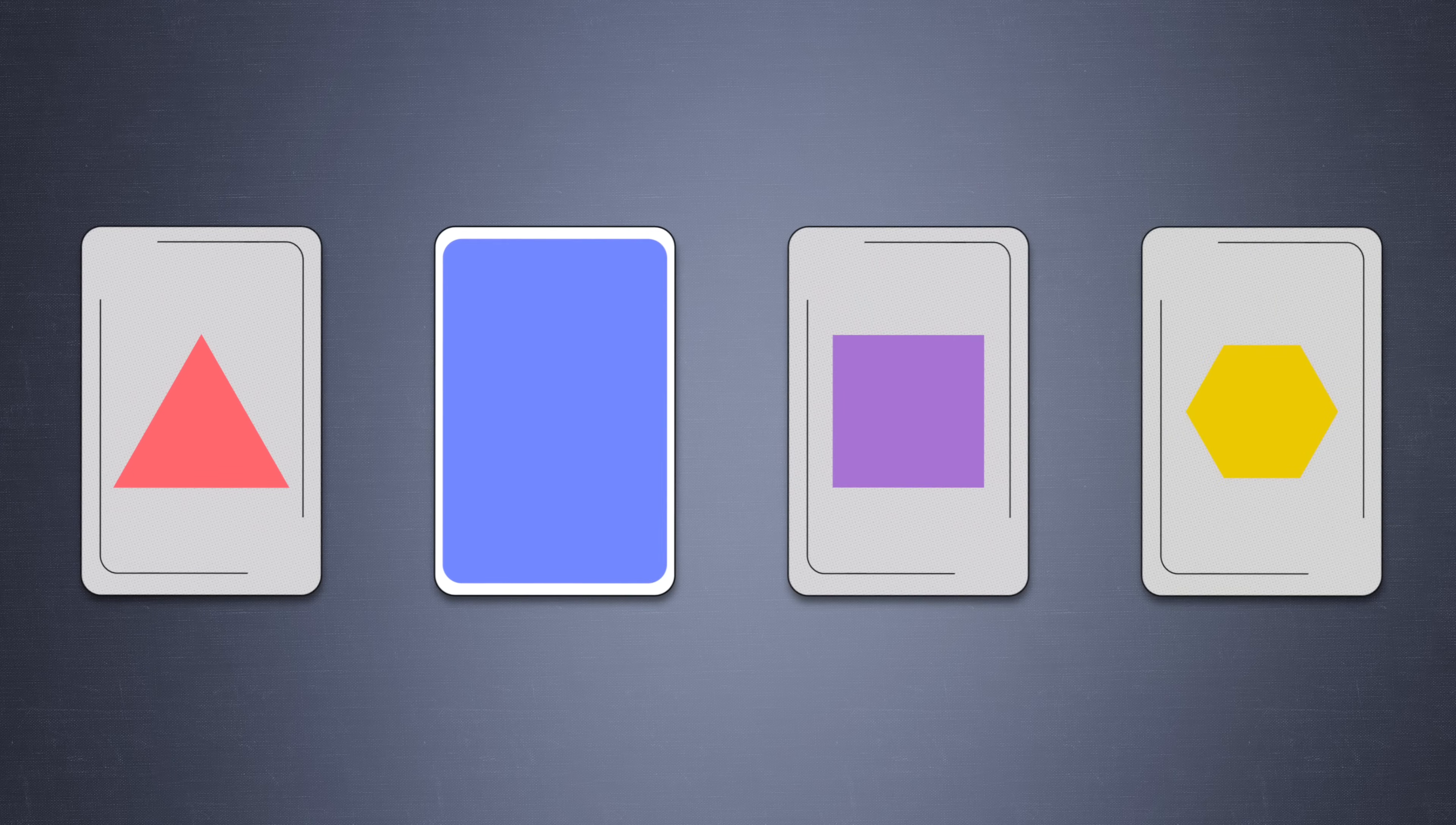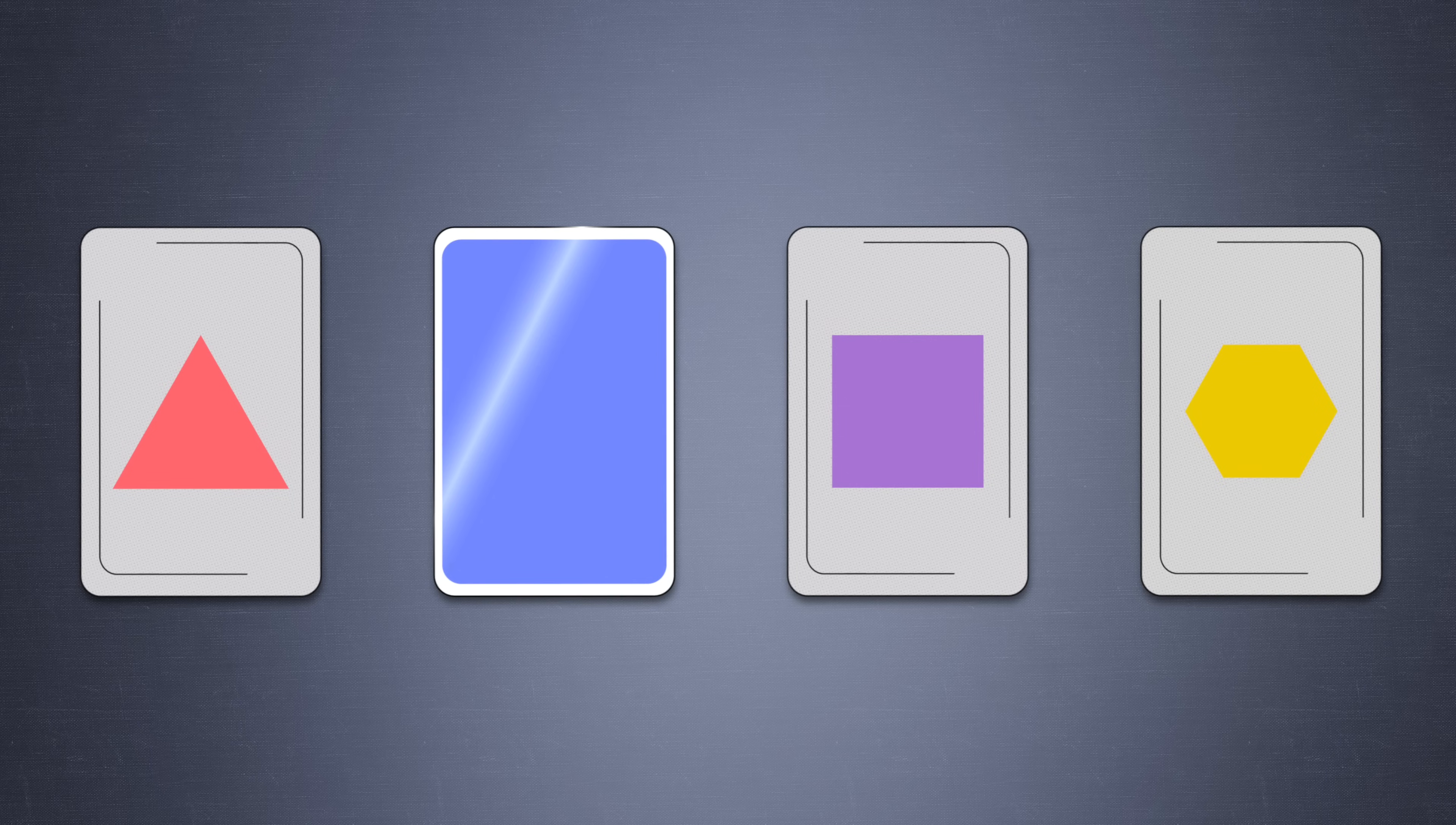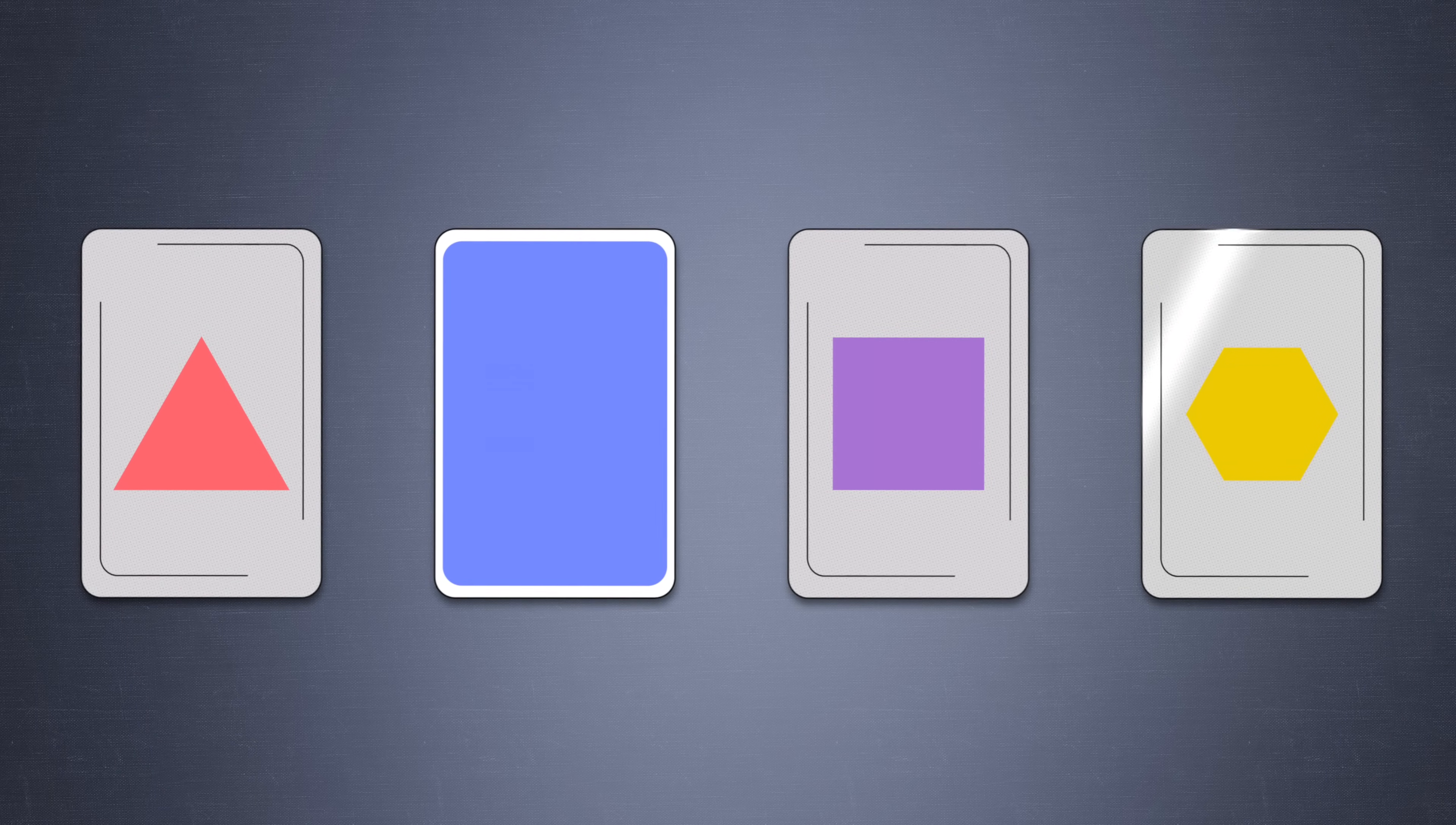Now that you're more familiar with logic puzzles, let's see how well you do with another challenge. Each of the four cards has a shape on one side and a solid color on the other. The sides you see are a red triangle, a solid blue, a purple square, and a yellow hexagon.